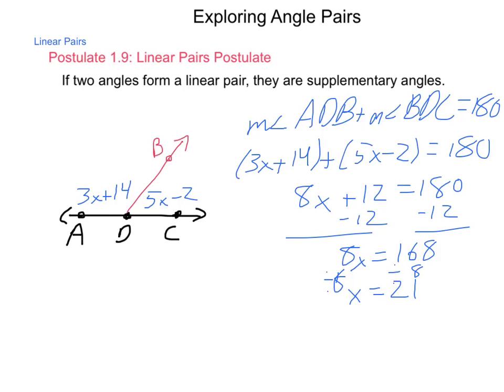So if x is 21, now let's put it back into the original expressions. 3 times 21 is 63 plus 14 is 75 degrees. And 5 times 21 is 105 minus 2 is 103 degrees. And the reason that doesn't add up is because I did my math wrong. 3 times 21 is 63 plus 14 is actually 77 degrees, not 75. And we can check 77 degrees plus 103 degrees makes 180 degrees.